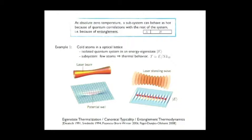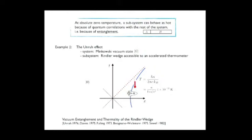I'd like to give two examples. The first comes from condensed matter: atoms in optical lattices, where the isolated quantum system is in an energy eigenstate of the many-body Hamiltonian and the subsystem is just a few atoms, and you find thermal behavior for these few atoms. This fact has apparently been rediscovered many times under different names: eigenstate thermalization, canonical typicality, or—the name I prefer—entanglement thermodynamics.